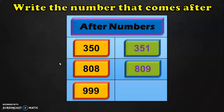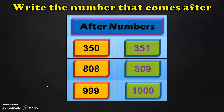What is the number which comes after 999? The answer is 1000. Now 1000 is a four-digit number and we will be dealing with four-digit numbers in Class 3. In Class 2 we will be seeing numbers up to 999 — three-digit numbers.